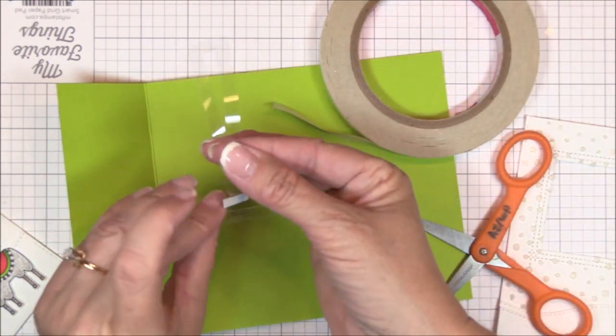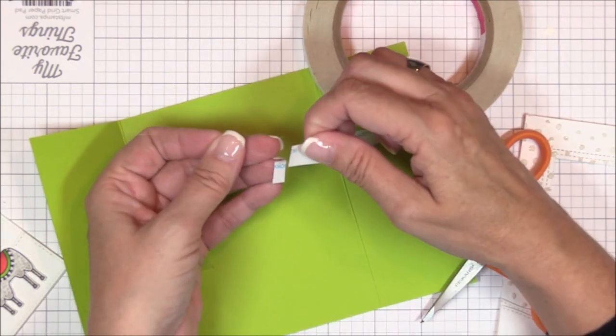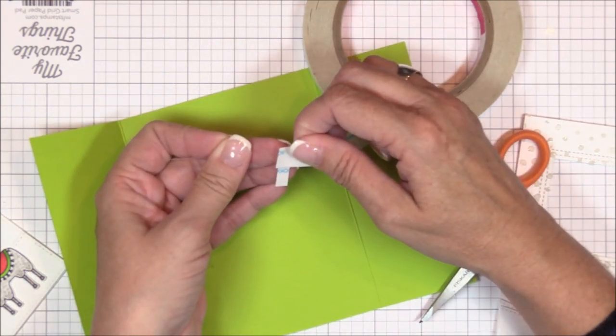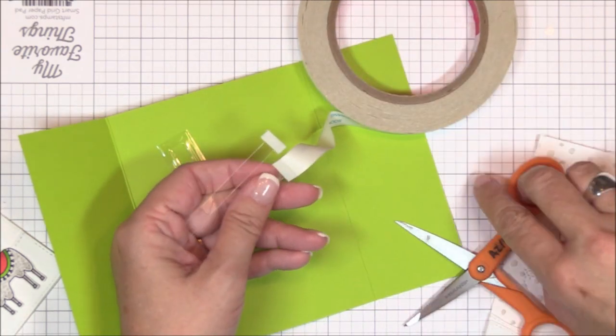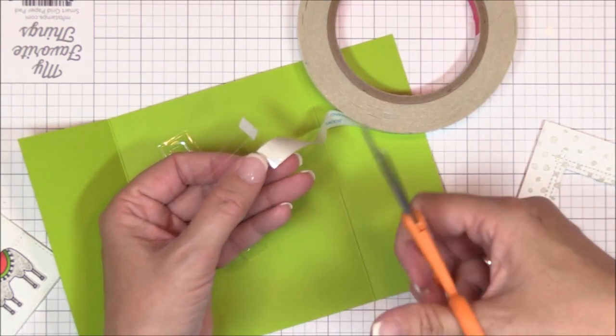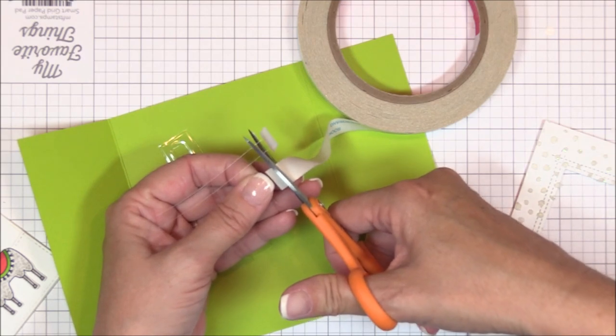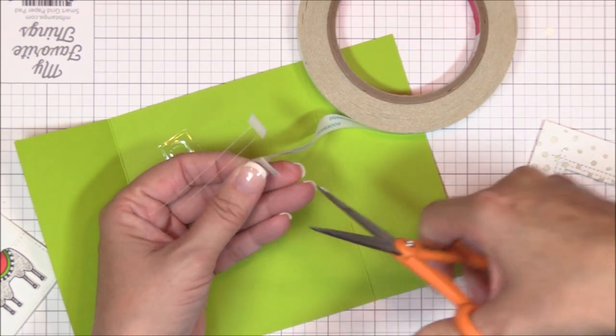I die cut the smaller of the two tri-fold slider dies twice from some clear acetate and I'm adding some half inch double-sided tape to the tabs. And again, all of the measurements for both the horizontal and vertical tri-fold card bases are included in the tips and tricks PDF linked below.